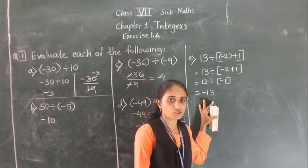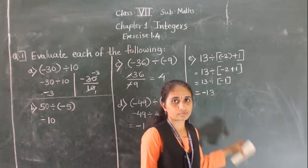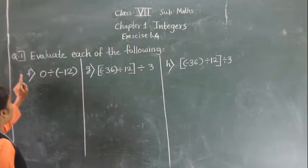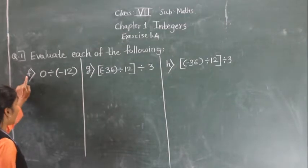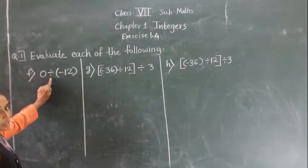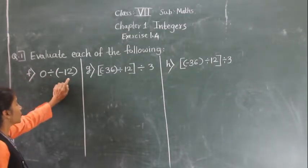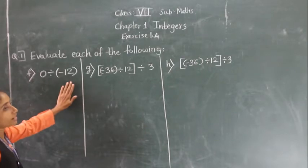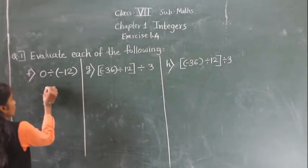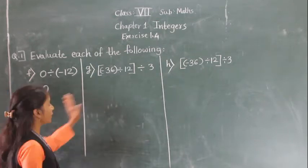Part (f): zero divided by minus 12. Zero divided by any number equals zero. So the answer is zero.